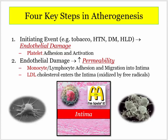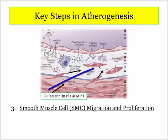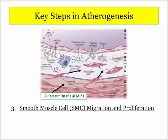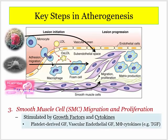Step three is smooth muscle cell migration and proliferation — smooth muscle cells are key players in atherogenesis. As shown in the diagram, they awaken from a quiescent state in the media and literally migrate into the intima, where they proliferate. What arouses them? Growth factors and cytokines. Commonly named factors include platelet-derived growth factor, vascular endothelial growth factor, and macrophage-derived cytokines including transforming growth factor. Note: the exam does not specifically ask you to name the growth factors — just be aware.